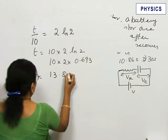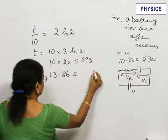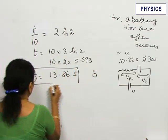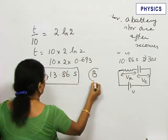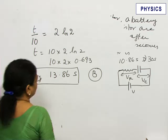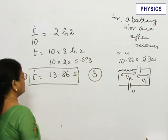t equals 13.86 seconds. The potential across the capacitor will become 9 volt which is 3 times that across the resistor.